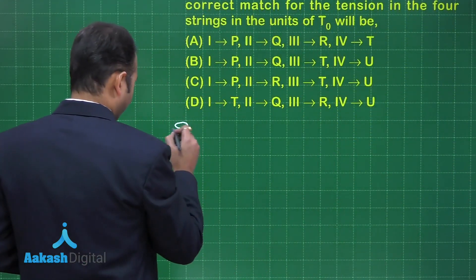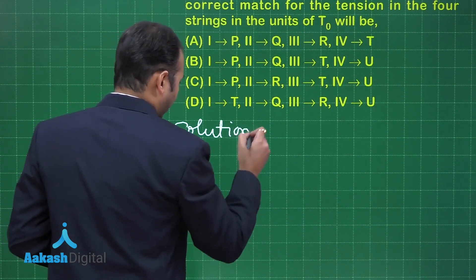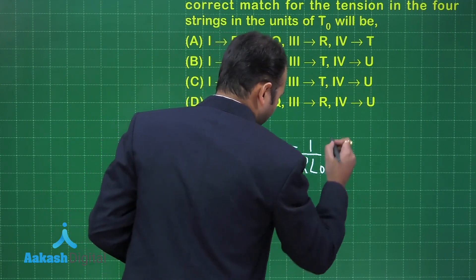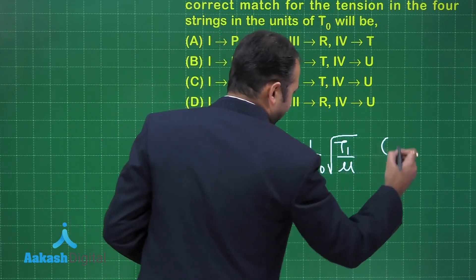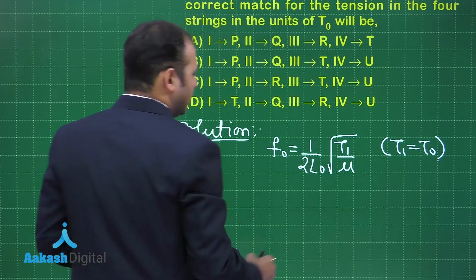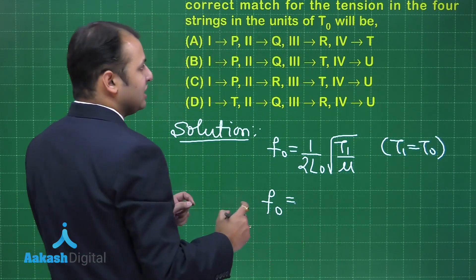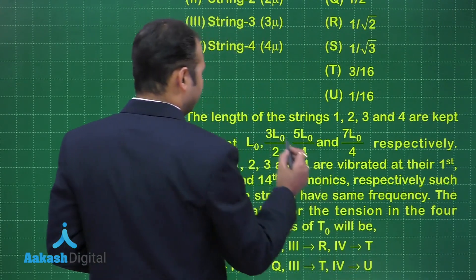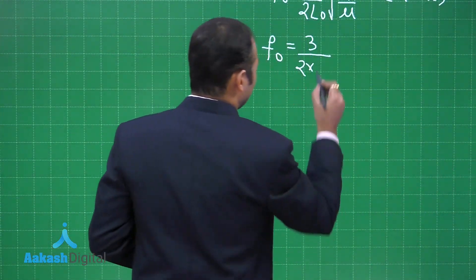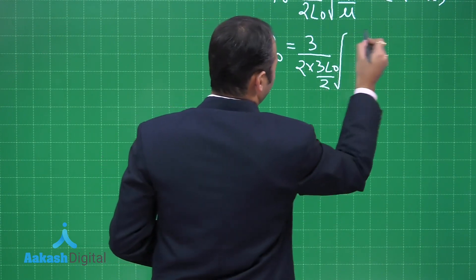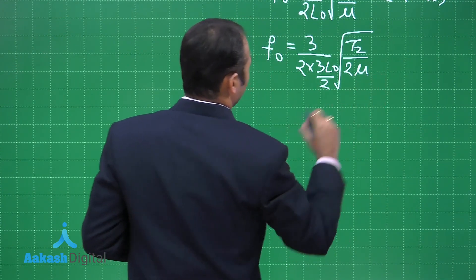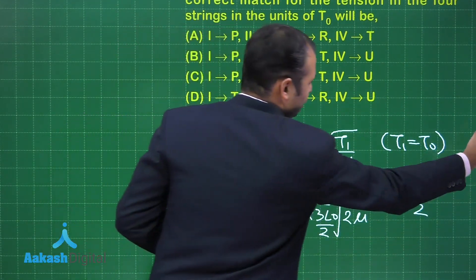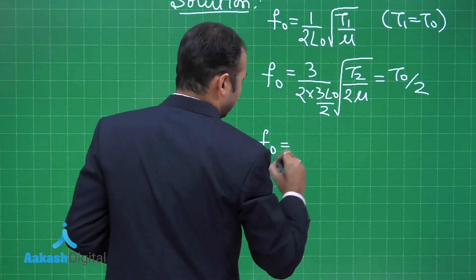Let's write the equations. For the first wire at the first harmonic: F0 = 1/(2L0) × √(T1/mu), giving T1 = T0. For the second wire in the third harmonic, with length 3L0/2: F0 = 3/(2 × 3L0/2) × √(T2/2mu). Solving this gives T2 = T0/2, since both frequencies are equal.